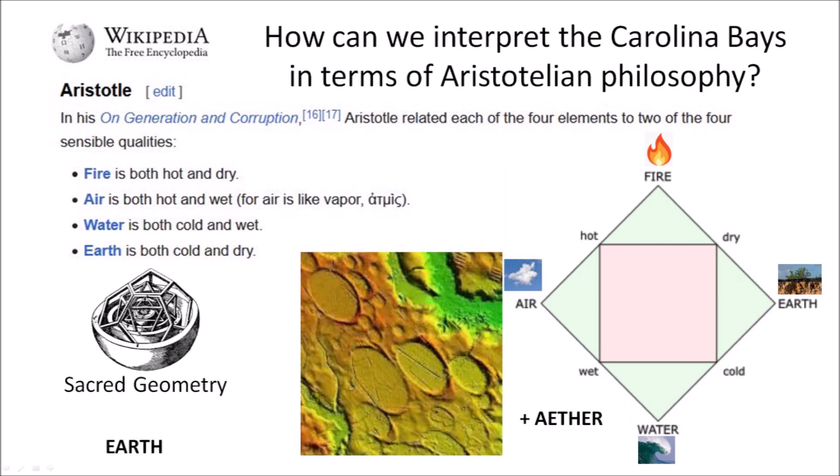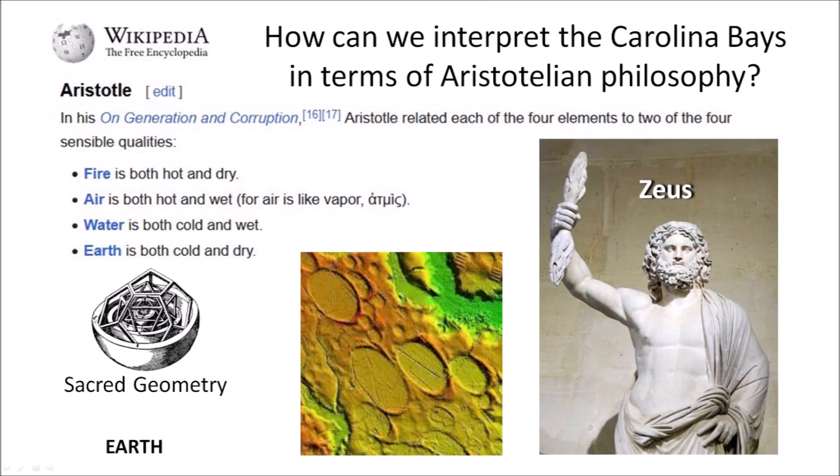Very quickly we come back to the present and ask: how can we interpret the Carolina Bays in terms of Aristotelian philosophy? In ancient times, regular shapes were associated with sacred geometry. According to Aristotle, God caused the world to be as it is, and the spheres of the cosmos were a confirmation of this belief. From that point of view, the elliptical geometry of the Carolina Bays is a manifestation of sacred geometry. In ancient Greek religion, Zeus ruled as king of the gods on Mount Olympus — so the Carolina Bays with their sacred geometry were made by Zeus.